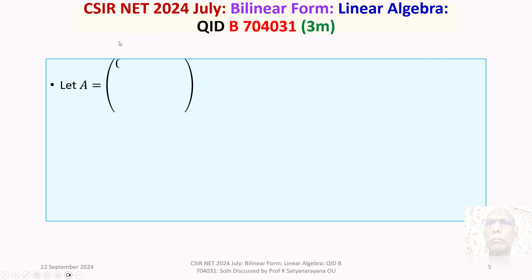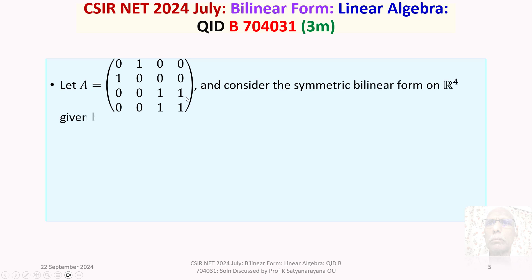We have the given question: let A be this 4×4 matrix, and consider the symmetric bilinear form on R⁴ given by bracket(V, W) = V transpose AW for V, W belonging to R⁴. The image of the ordered pair (V, W) under the given symmetric bilinear form is to be read as bracket(V, W) from now onwards.